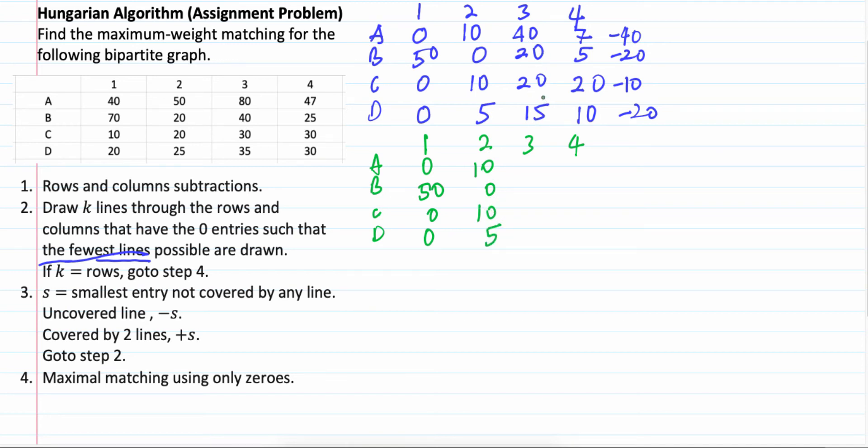This column, no 0. So, the smallest one is 15. So, minus 15. 40 minus 15, 25. 20 minus 15, 5. 20 minus 15, 5. 15 minus 15, 0.